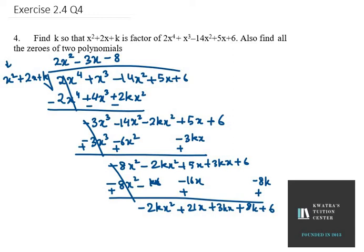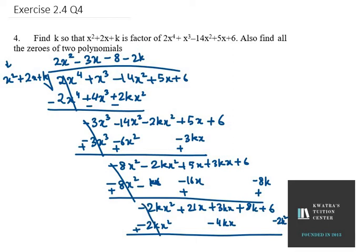We again have an x² term: to produce minus 2kx² we multiply by minus 2k, giving minus 2kx², then minus 4kx, then minus 2k times k which is minus 2k². After subtracting, the x² terms cancel; we are left with the remainder: 21x plus 7kx plus 8k plus 6 plus 2k².